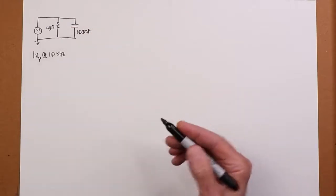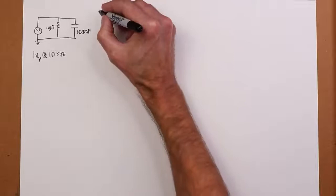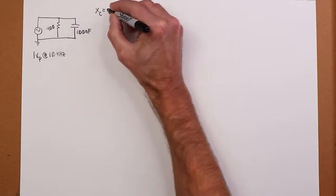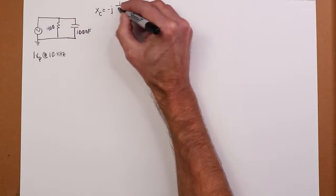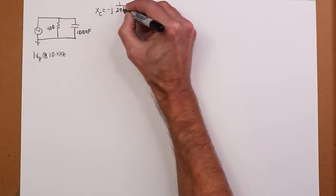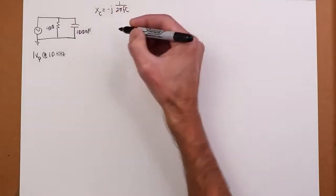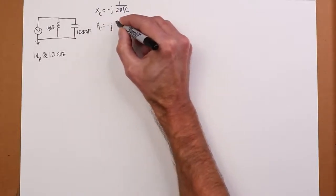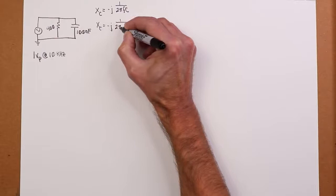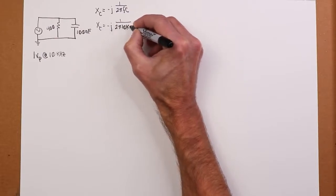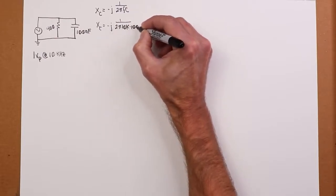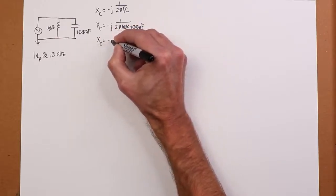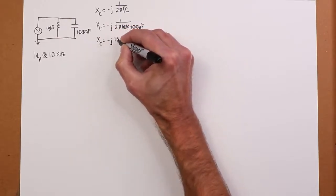Alright, so the first thing we have to do is find out what Xc is. So we have our equation for that. Xc is a negative j times 1 over 2πfc. So we can plug our numbers in here. We've got 10 kilohertz and 100 nanofarads.